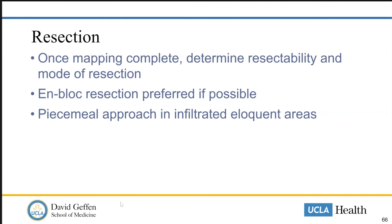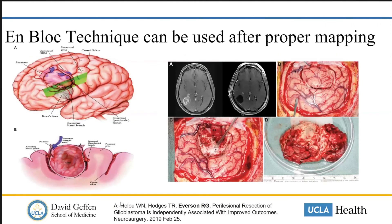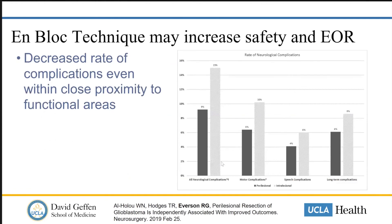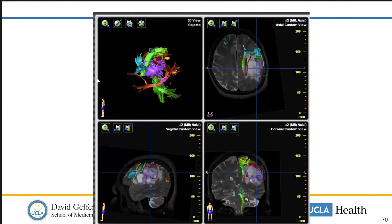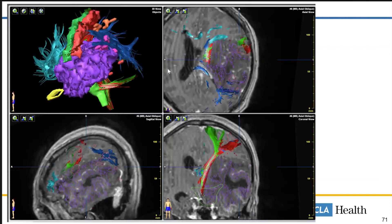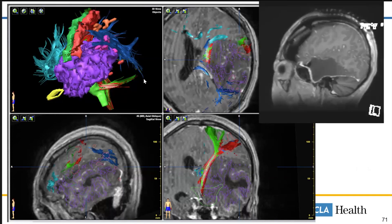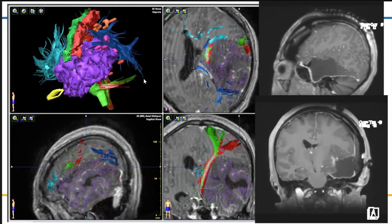Once mapping is complete, we determine resectability and try to remove the tumor in whatever fashion is feasible given how close or far it is from eloquent areas. If feasible, we prefer to perform an en-bloc technique — basically removing the tumor in one piece if it is sufficiently separate from functional areas. With good functional mapping, even tumors that appear located in motor, sensory, or language areas, including those displacing all aforementioned tracts, can be removed safely and often en bloc with no functional limitations.